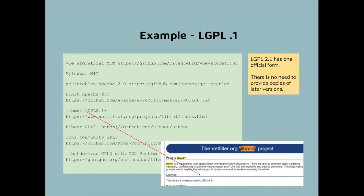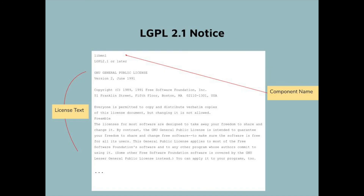Now we have another example of a canonical license: LGPL 2.1. This project uses LGPL 2.1 plus, or LGPL 2.1 or any later version. At this time there is only one later version — LGPL 3 — but that doesn't matter. We put the name of the component and the entire license, but here we only put version 2.1. It's not necessary to put every later version into the notice file, only the one that's mentioned.